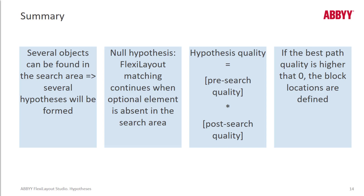Let's recall what we've covered here. Several objects for a given element can be found and hypotheses will be formed. The null hypothesis is when something is not found, and matching will still continue unless that was a required element. The hypothesis quality is equal to the pre-search quality — set by either pre-search Flexi Layout language code or GUI settings — as well as the post-search quality, which is affected by Flexi Layout language entered in the post-search quality scripting area. If the best path quality is higher than zero, the block locations are defined.